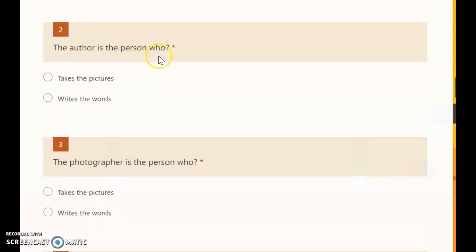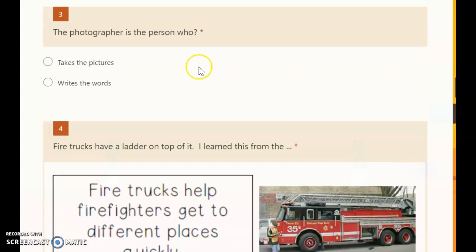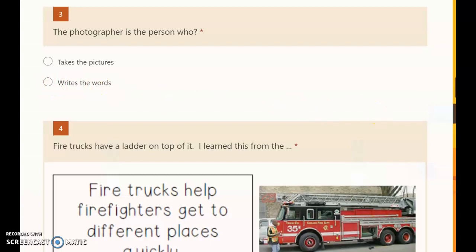Then it says the author is the person who, and it's either takes the pictures or writes the words. You will click on one of these circles. The photographer is the person who takes the pictures or writes the words. Again, choose just one.